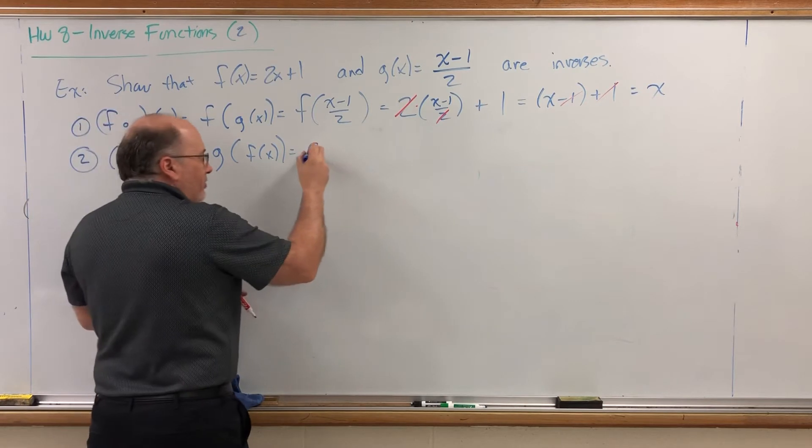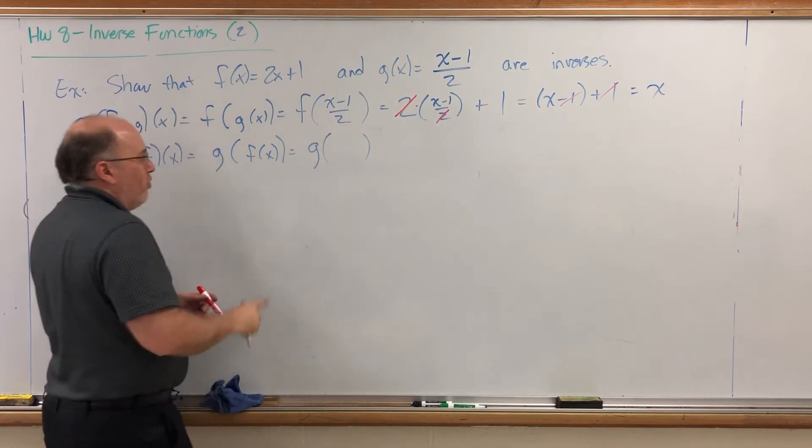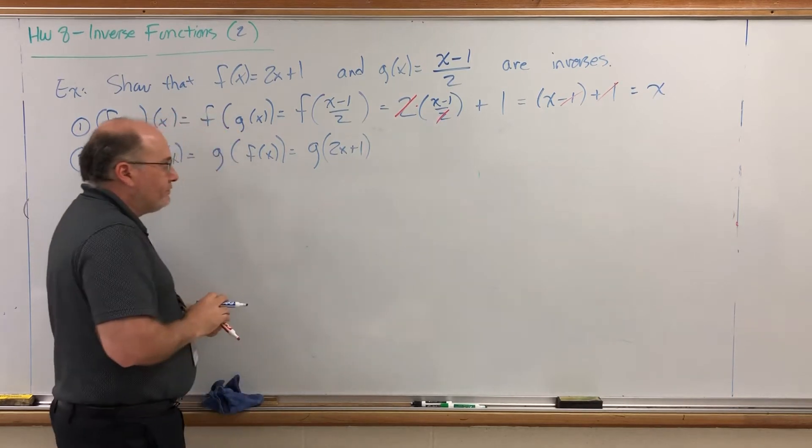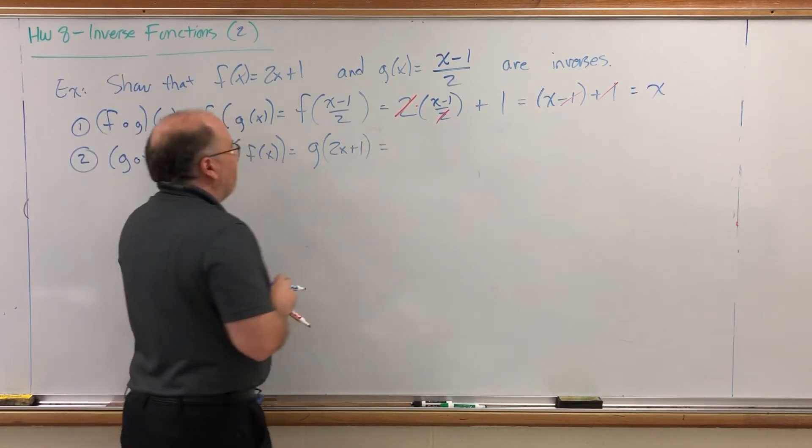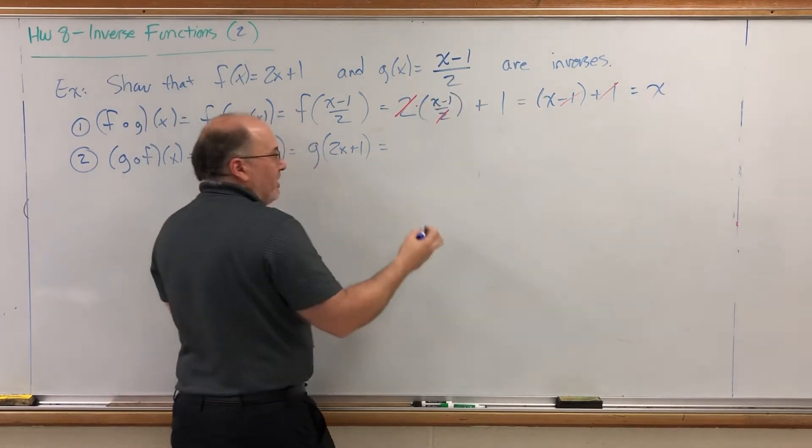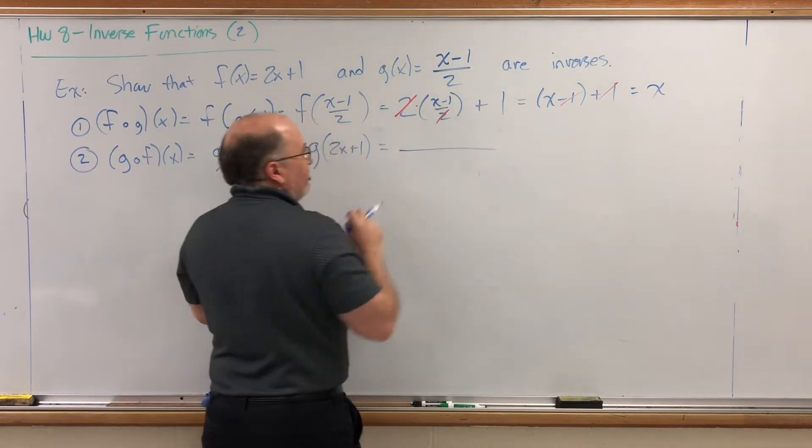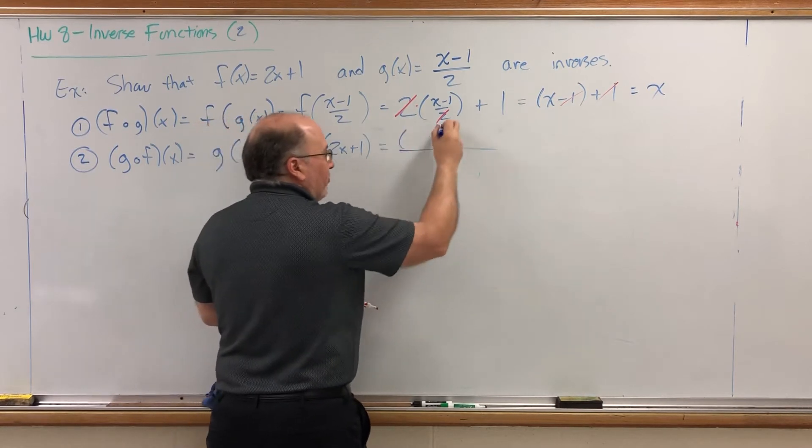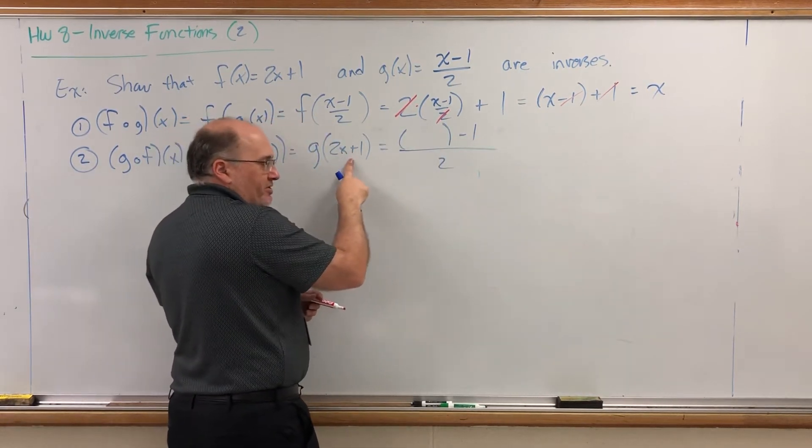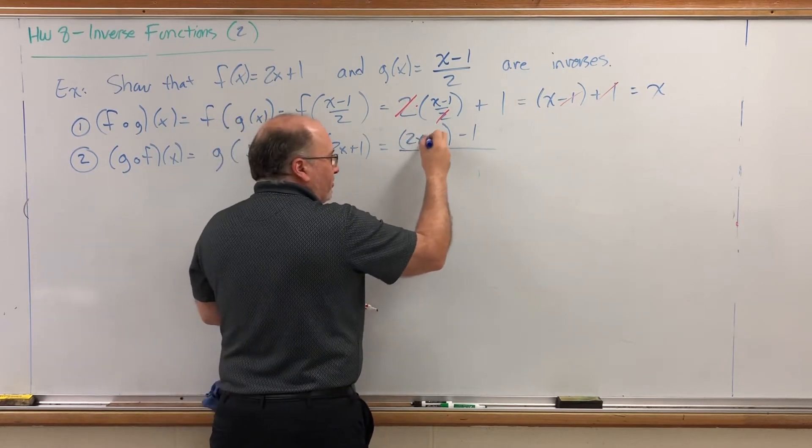Start on the inside. Replace the f of x with what it equals, 2x plus 1. Now we have to put that into the g function. g says take something, subtract 1, divide by 2. I'm going to copy the g function, but replace the x with parentheses. And then fill in the parentheses with the contents of these parentheses, 2x plus 1.